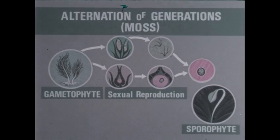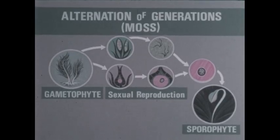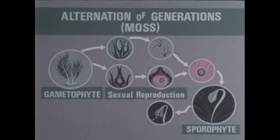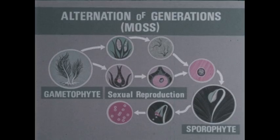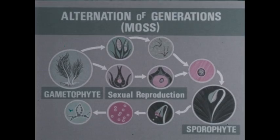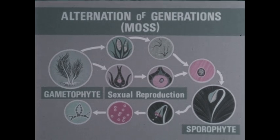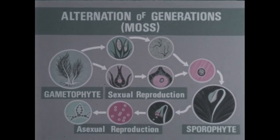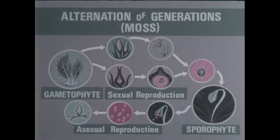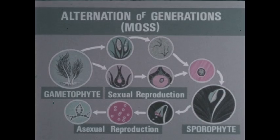The egg becomes a sporophyte, a plant that produces tiny asexual reproductive units, spores. Each spore can germinate to form a young gametophyte, which grows into a leafy moss plant. This asexual reproduction completes the moss life cycle with its alternating gametophyte and sporophyte generations.